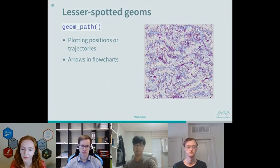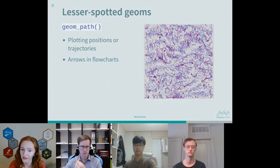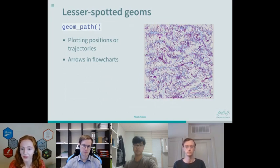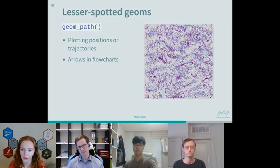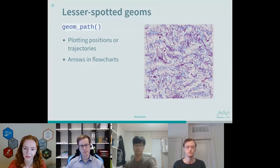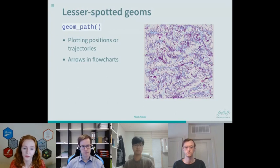I found geom_path really useful for plotting positions or trajectories — when you have time as a variable but don't want to put it on the x-axis, such as showing how a scatter plot evolves over time. I can see this working well as a static alternative to animated plots with gganimate, for anything looking at the evolution over time of multiple variables.